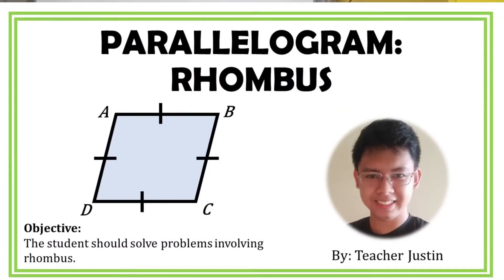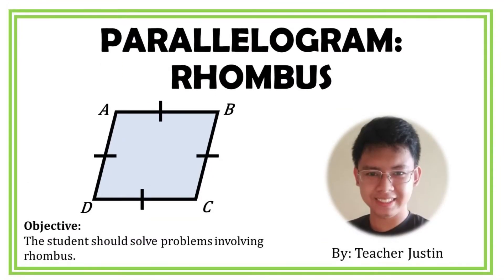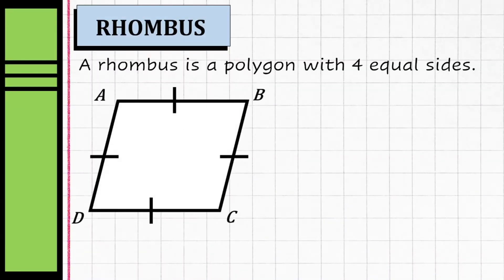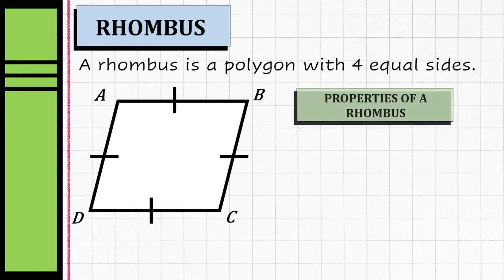Good day everyone, welcome to Math with Teacher Justin. On today's topic we're going to talk about rhombus and its properties. A rhombus is a polygon with four equal sides, so this is an example of a rhombus.